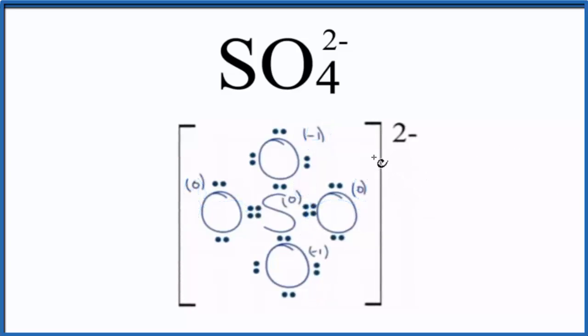Because these formal charges now are all zero, we still have a minus one and a minus one, but that's okay. They need to match. This is a much more favorable or likely or better Lewis structure for SO4 2-.